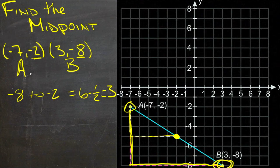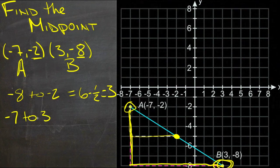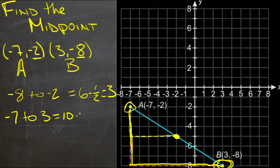Looking for the left to right difference, we're going from -7 to 3. So here we have 7 points to 0 and 3 more, so that's a difference of 10. Half of that would be 5.